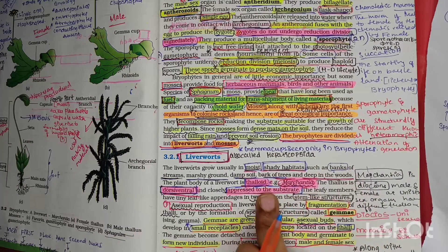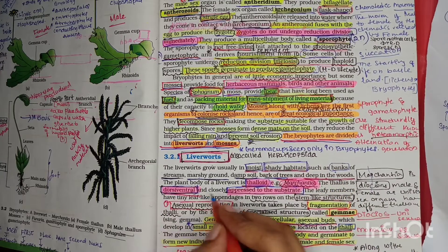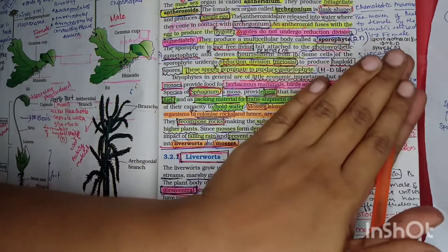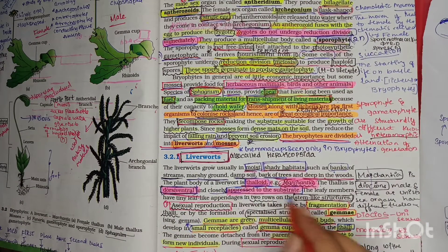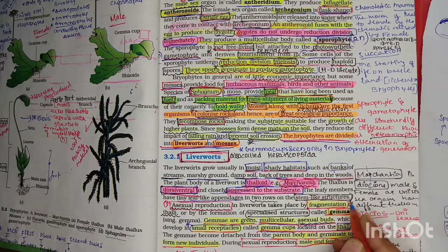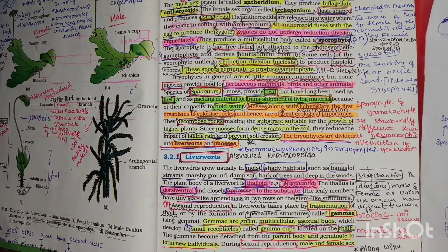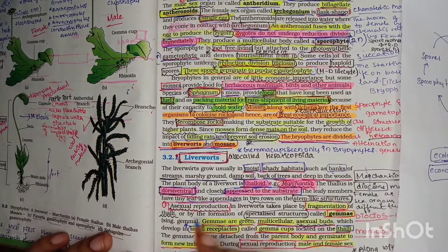An example of liverwort is Marchantia. The thallus is dorsiventrally flattened and closely appressed to the substratum or rock. A few leafy members have tiny leaves arranged in two rows on stem-like structures, but mostly they are thalloid. Reproduction in liverworts is done by asexual and sexual reproduction.